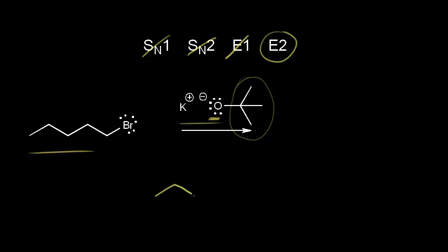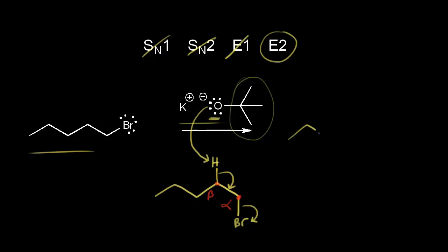Let me redraw our alkyl halide with the bromine going down. The carbon directly connected to the bromine is our alpha carbon, and the carbon bonded to the alpha carbon is our beta carbon. We have two beta hydrogens. In our E2 mechanism, our strong base is going to take that beta proton. At the same time, these electrons move into here and these electrons come off to form our bromide ion. So our final product has five carbons with a double bond between these two carbons, as the electrons in magenta move in to form the double bond.